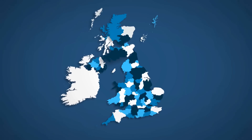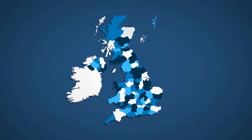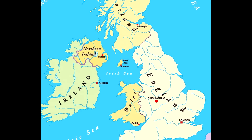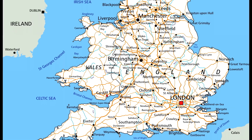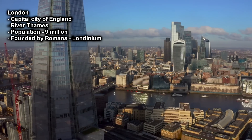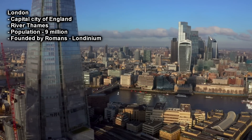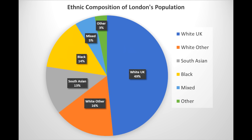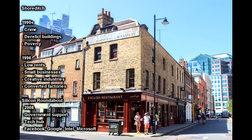Moving on to UK urban challenges, you should start with your basic knowledge of the UK and the distribution of UK cities. You will look at case studies such as London, Bristol or Liverpool. Start with general background information on the area, and know basic facts such as the population, ethnic diversity, and then look at redeveloped areas such as Shoreditch in London.